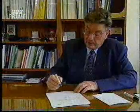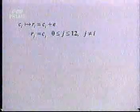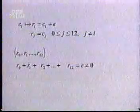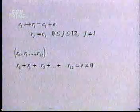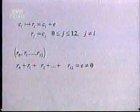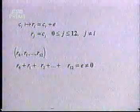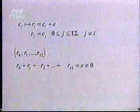Now again, let us assume an error occurs in position i. So instead of Ci, we receive Ri equals Ci plus E. E is the magnitude of the error. And the remaining symbols Rj are equal to Cj. Now if we do the calculations again, the sum of the received symbols will not be 0, but it will be equal to E. So we say an error has occurred, and in fact, we know the magnitude of the error is E.